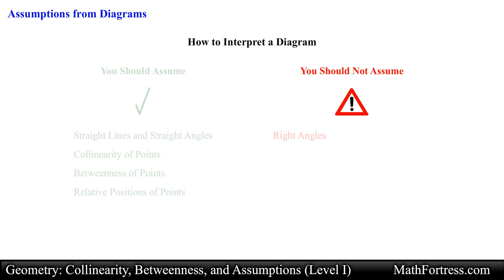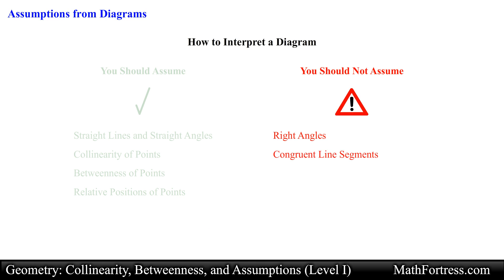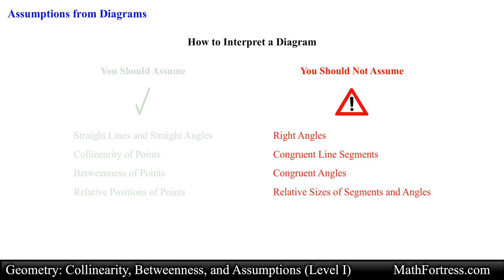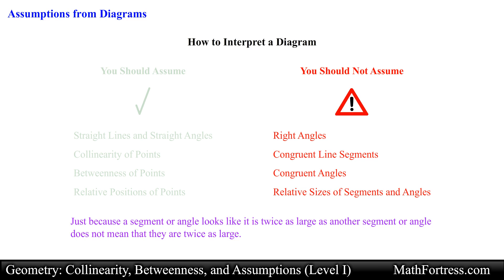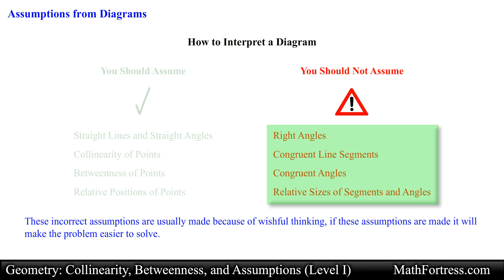You should not assume the following: right angles — this is one of the most common mistakes students make; never assume that an angle is a right angle just because it looks like one. The second most common mistake is to assume congruent line segments and congruent angles — just because two segments or angles look congruent does not mean they are congruent. Lastly, you should never assume the relative sizes of segments and angles. Just because a segment or angle looks twice as large as another does not mean it is. One reason students make these incorrect assumptions is wishful thinking.